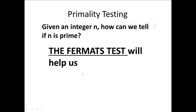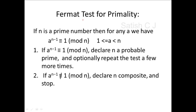Let's understand what the Fermat test is all about. The Fermat test for primality says: if n is a prime number, then a^(n−1) is congruent to 1 mod n, where a should be anything between 1 and n. That's how you determine whether n is prime. If this is true, we can conclude that n is probably prime. I am using the word 'probably' because Fermat's test is a probabilistic theorem — the accuracy of the algorithm depends on how many different values for a we take.